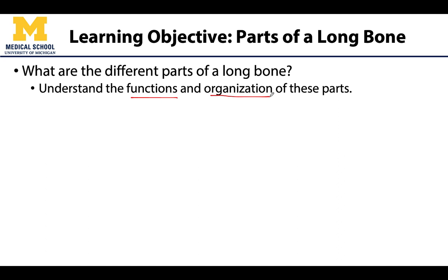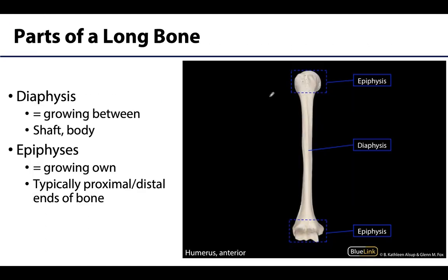Or is it not even bone at all, but a type of a different connective tissue? The two major parts of a long bone are the diaphysis and the epiphysis. The diaphysis means 'growing between' and it is the long main portion of the bone, sometimes referred to as the body or shaft of a long bone. It is composed of mostly compact bone with a middle hollow region.